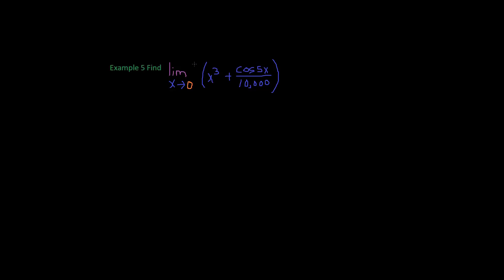Alright, so example 5. Find the limit of the function f of x, which equals x cubed plus cosine 5x divided by 10,000 as x approaches 0.